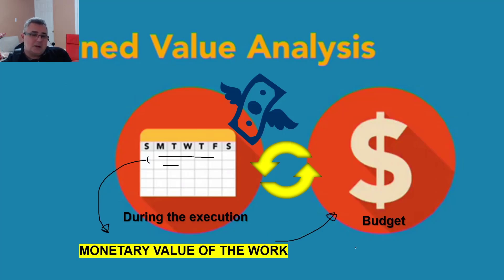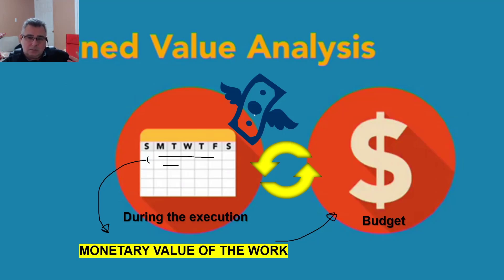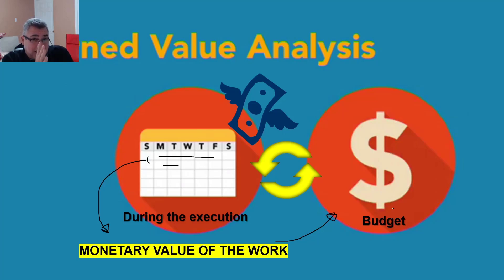That's the idea of the earned value system — during execution we analyze the work done, understand the expenses, compare them to your budget to see if you'll be able to finish the project within budget. Sometimes you can, sometimes you can't. If in the middle of the project you realize you don't have enough money to finish, that's when you start issuing change requests and asking for more money. The amount of money you are using must be aligned with your budget.